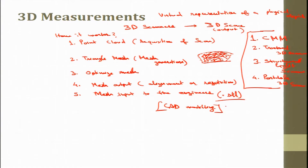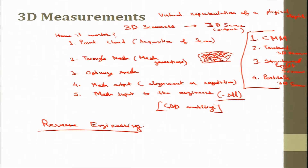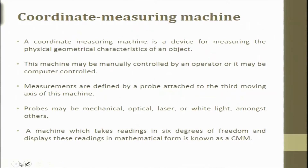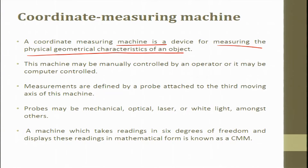That was a brief introduction to 3D scanning. The major application is in reverse engineering. Now I would like to move to the coordinate measuring machine. A coordinate measuring machine is a device for measuring the physical geometrical characteristics of an object.